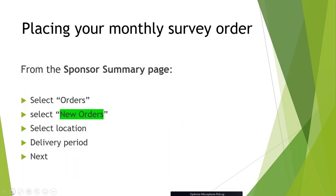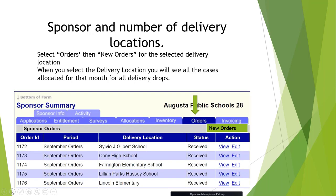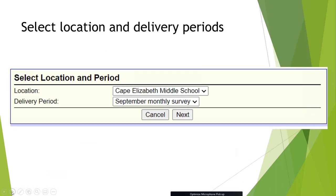To place your monthly survey from the sponsor summary page, select Orders, then select New Orders. Select your location, your delivery period, and then click Next. Orders will be highlighted in dark blue when you are working on that tab. If you have only one location, it will list just one. If you have multiple locations, select the location you want to work on first, then select the delivery period.